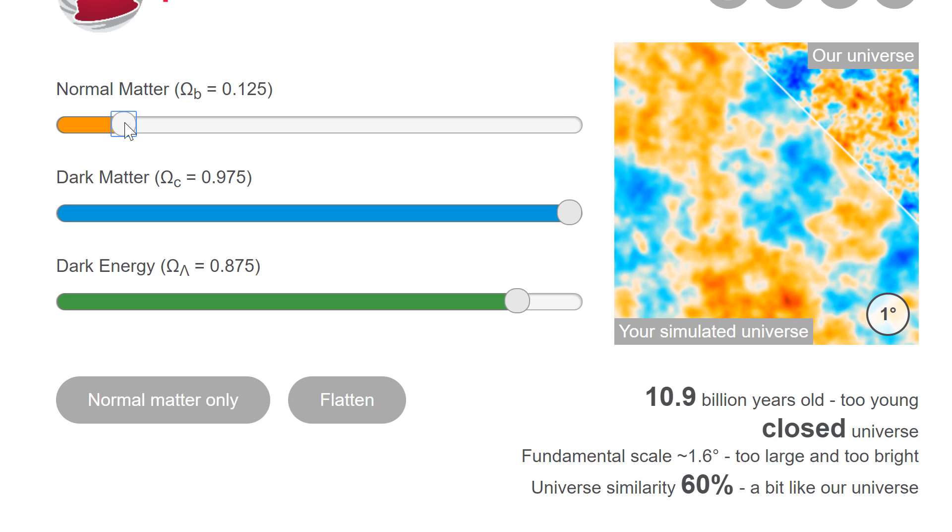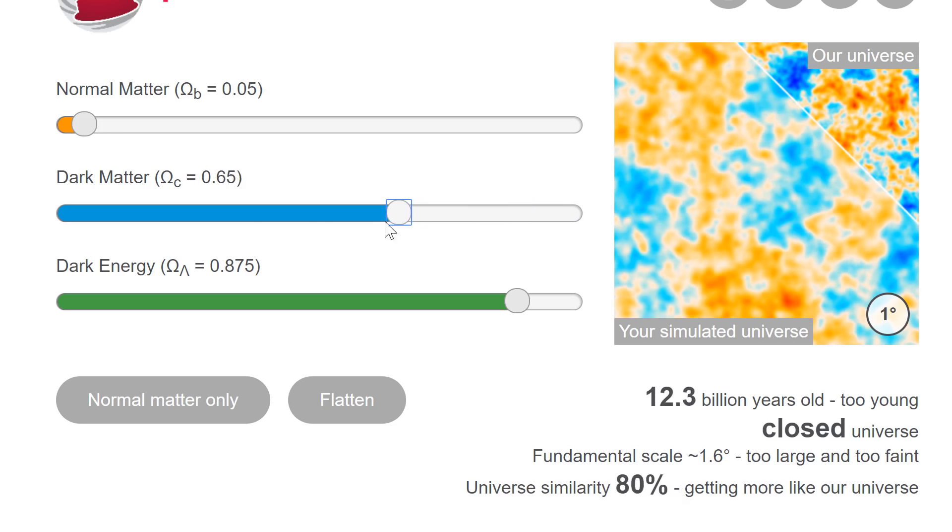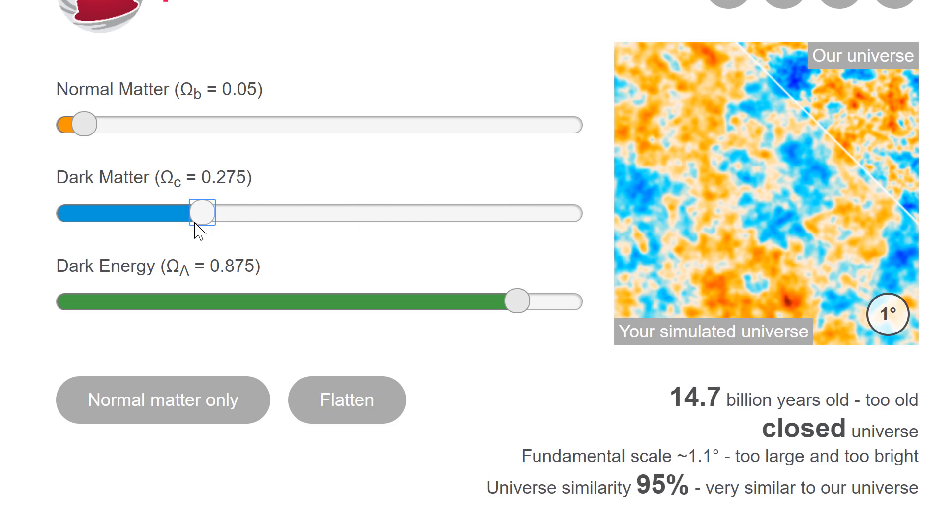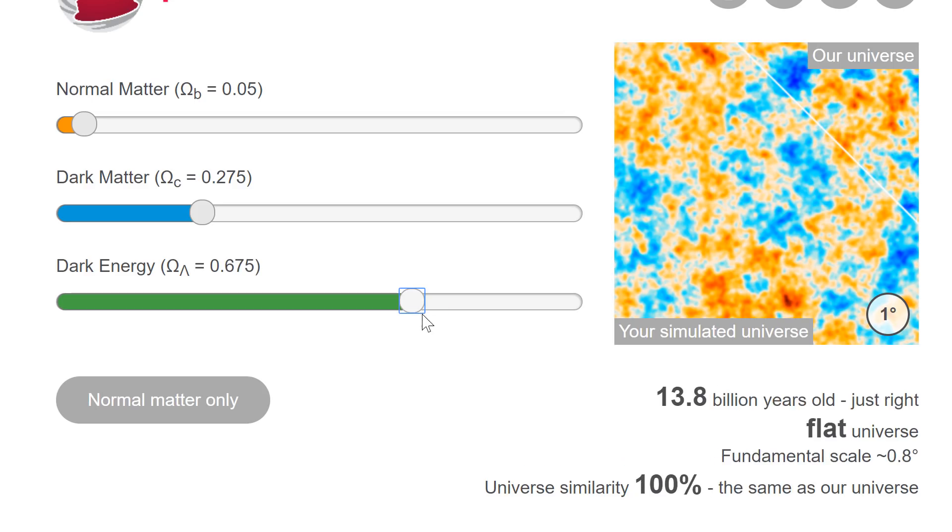So it turns out that current estimates put the actual normal matter at like 5%, dark matter at something like 27.5%, and the huge amount of stuff is really dark energy. So right around here, we're going to hit the sweet spot. There you go. 67.5%. This creates a galaxy that's just the right age, just the right shape, and just the right everything. 100% compatible. And so here, the simulated universe is actually almost exactly the same as our own universe.